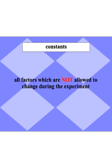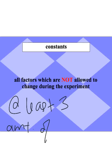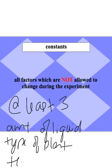Your constants are all the things in the experiment that you are keeping the same, that you are not changing. You should have a huge list of constants when you are designing your experiment — at minimum, give at least three when asked. In the example with watering a plant with different substances, our constants would be things like the amount of liquid, the type of plant, the temperature, sun exposure, how long between waterings, the amount of fertilizer, and the type of soil. All of those things would need to remain constant.